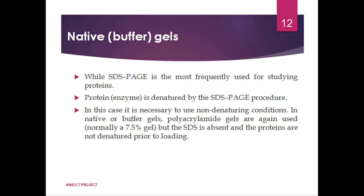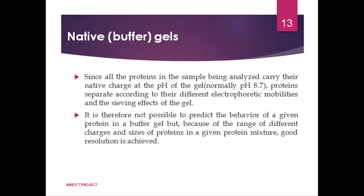In native gel electrophoresis, polyacrylamide gel without SDS is used and proteins are not denatured prior to loading. Since all proteins in the sample carry their native charge at the pH of the gel — normally pH 8.7 — proteins separate according to different electrophoretic mobility and the sieving property of the gel. It is not possible to predict the behavior of a given protein in a native gel, but because of the range of different charges and sizes of proteins in a mixture, good resolution is achieved.